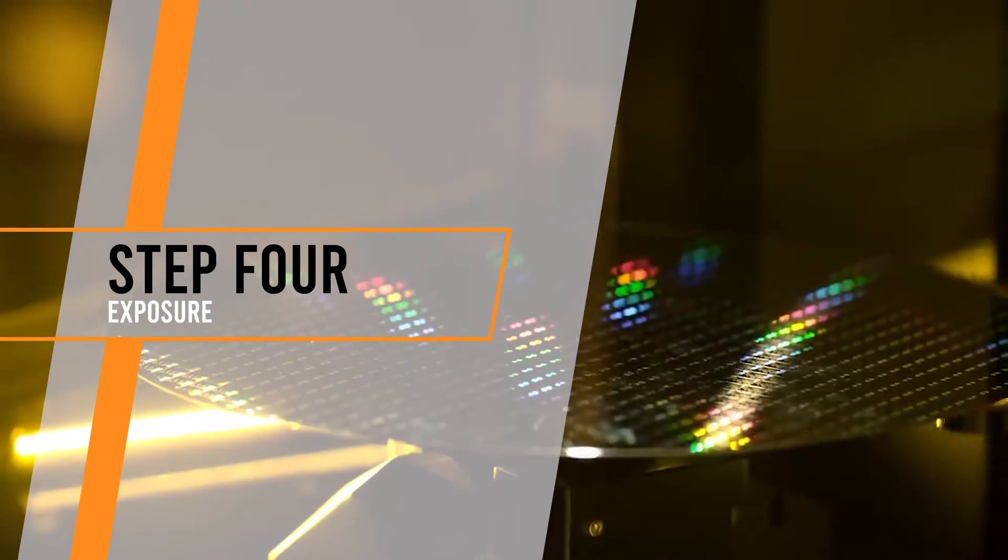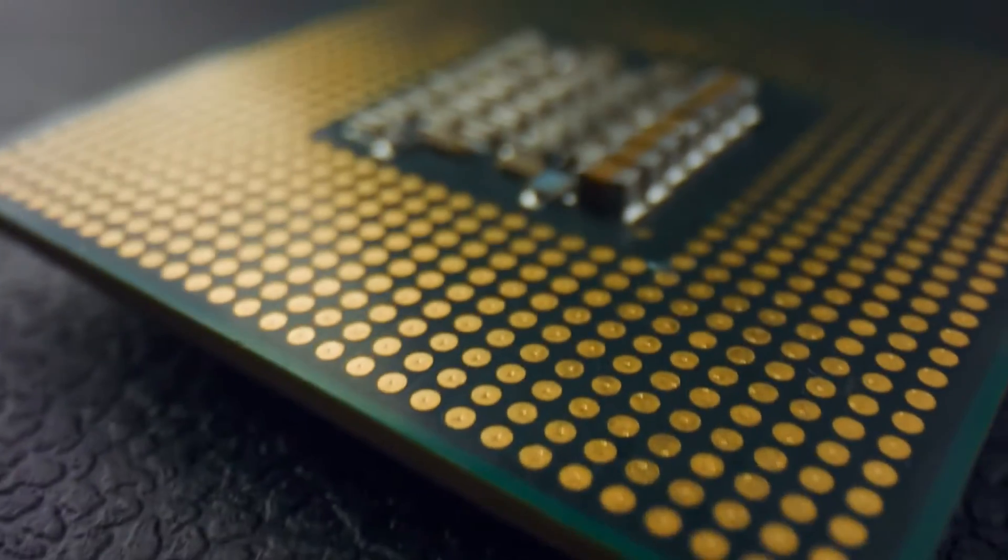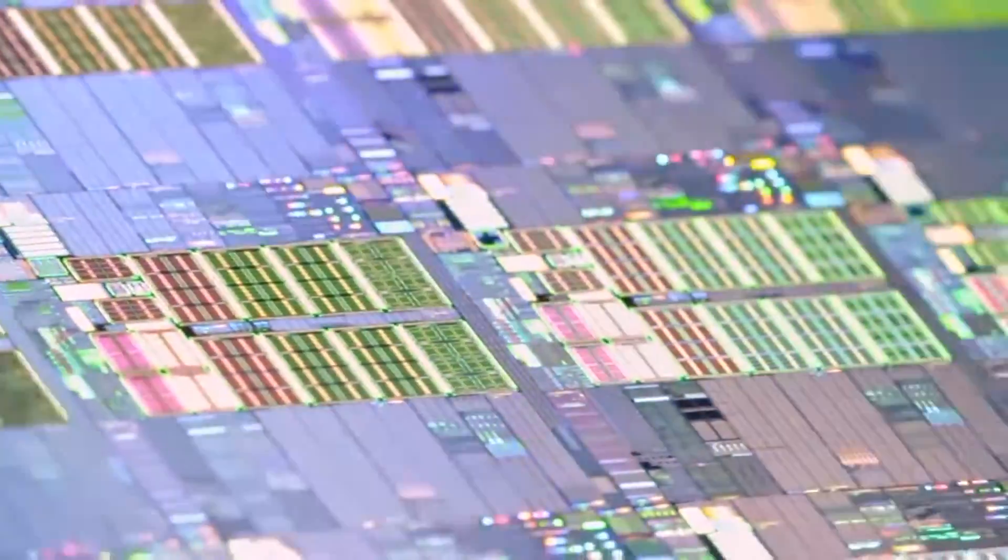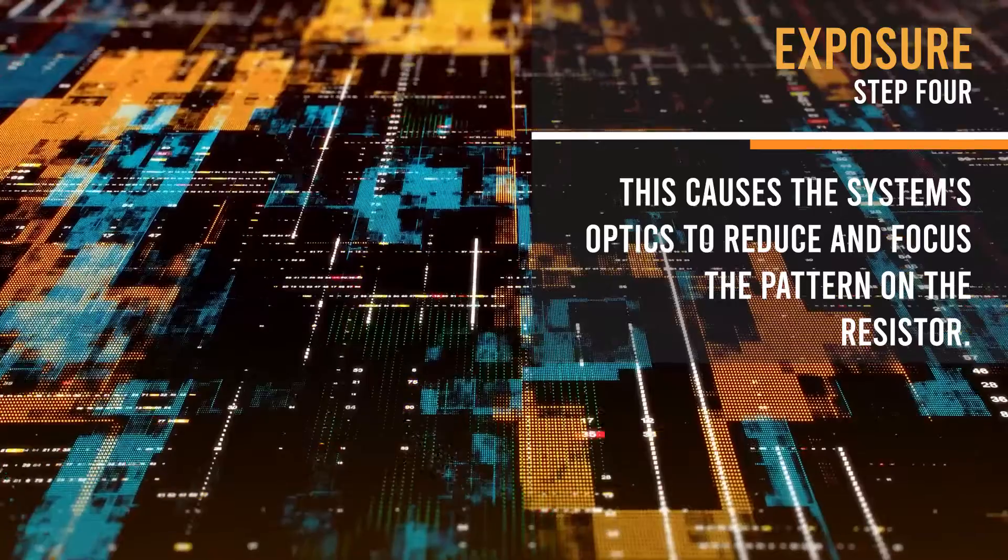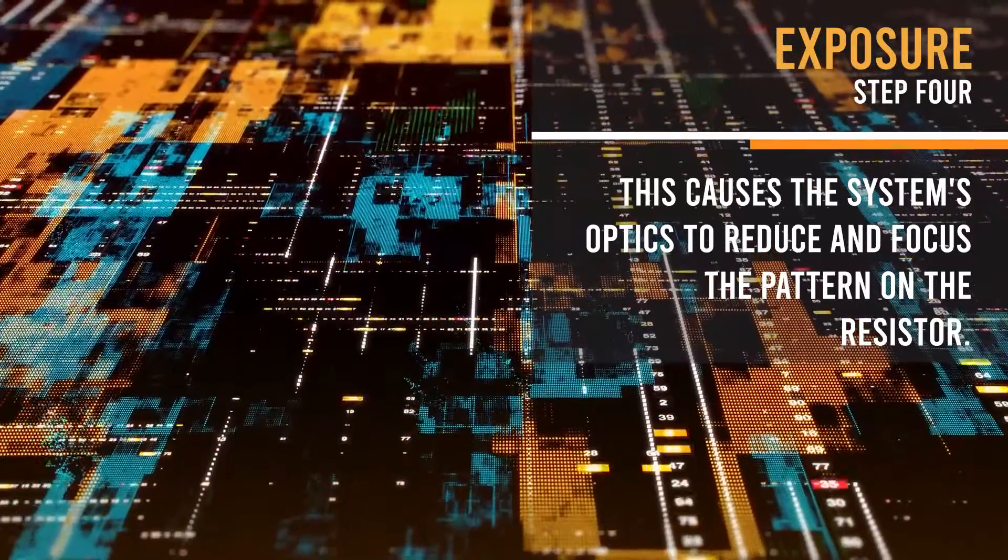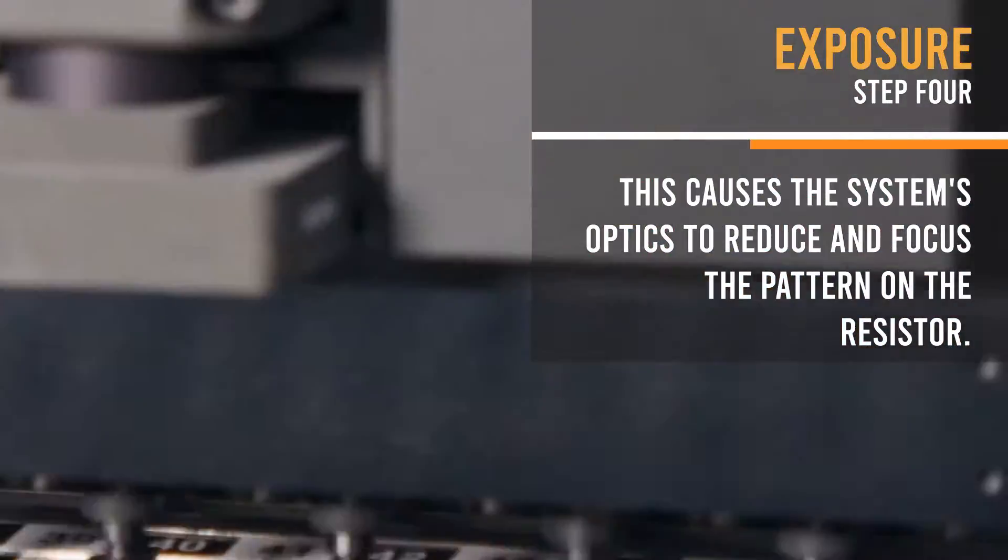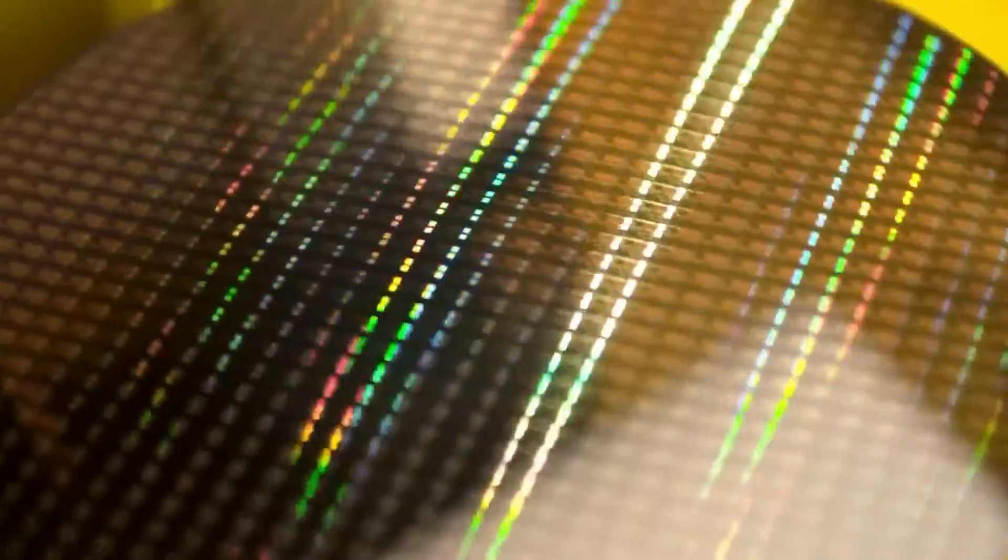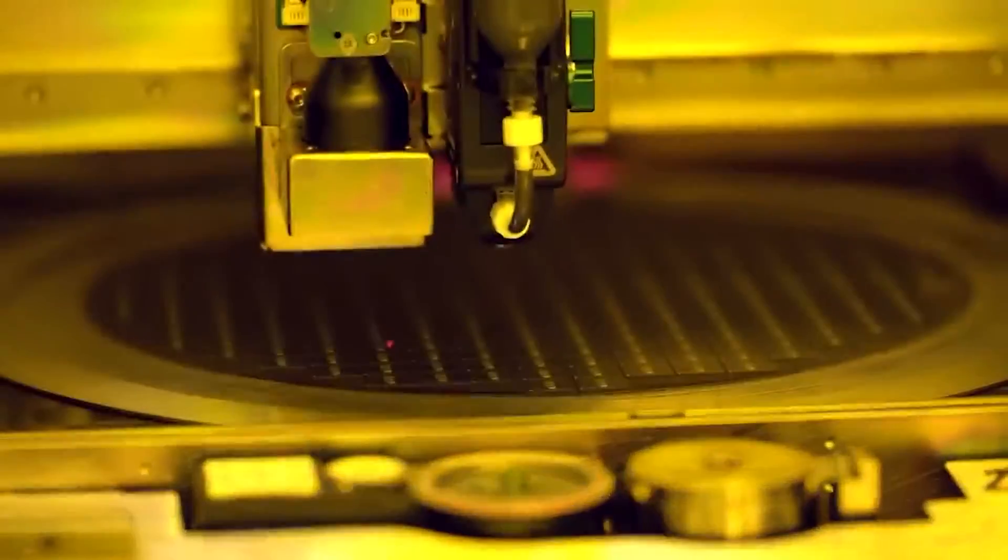Step 4. Exposure. Another step involved in the manufacturing of microchips is exposure, which involves the projection of light onto the wafer through the reticle containing the blueprint of the pattern to be printed. This causes the system's optics to reduce and focus the pattern on the resistor. Whenever light hits the resist, chemical changes will occur, thereby recreating the pattern from the reticle contained in the resist.